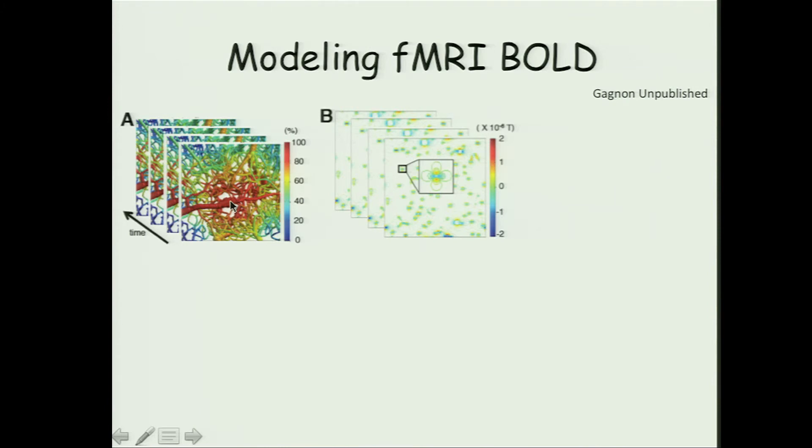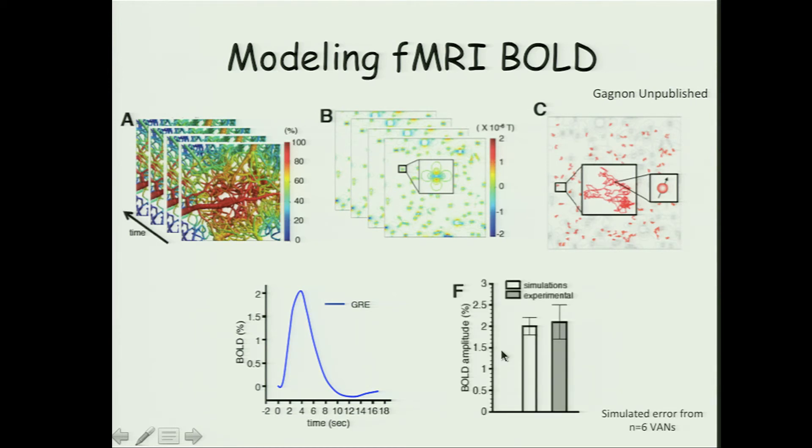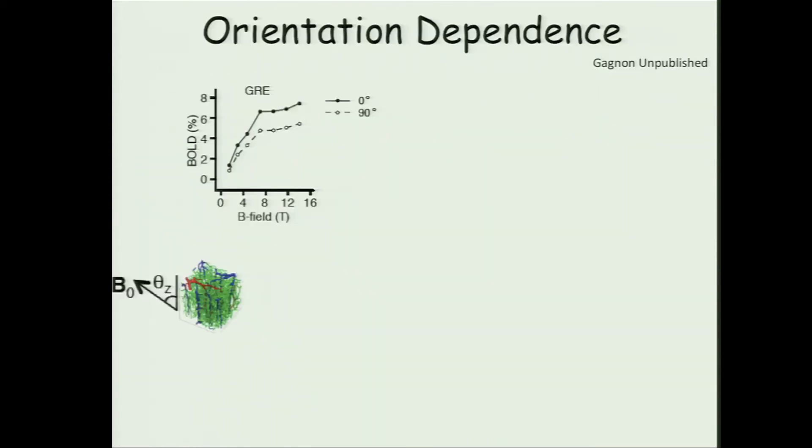Finally, now we have deoxyhemoglobin throughout the vascular network, and that's changing over time in response to a brain activation task. Deoxyhemoglobin is paramagnetic. It perturbs the magnetic field in an MRI scanner. That perturbed magnetic field modulates the dephasing of nuclear spins that are diffusing around the vascular network, and that gives rise to the fMRI signal that you measure with BOLD. We've performed these experiments with BOLD fMRI, and the experimental results agree very well with the simulations.